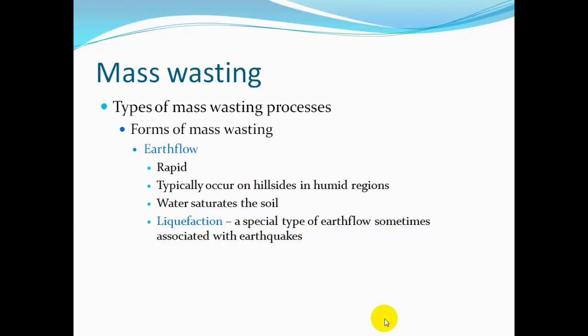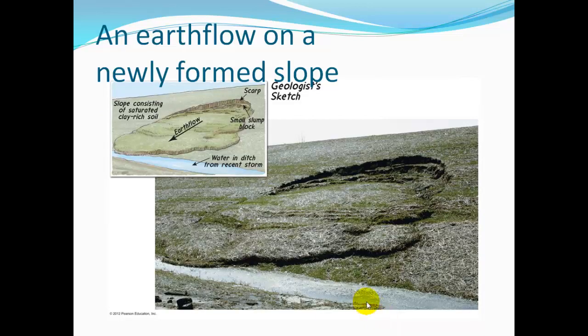An earth flow is very rapid and typically occurs on hillsides in humid regions where water saturates the soil and liquefaction takes place. This is also a special type of earth flow associated with earthquakes — when you have a lot of water in the soil, shaking liquefies it and it flows. Here's a picture of an earth flow showing the scarp where the soil broke and the material that flowed downslope.